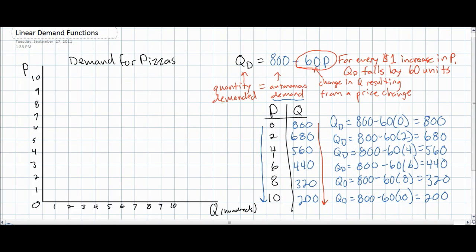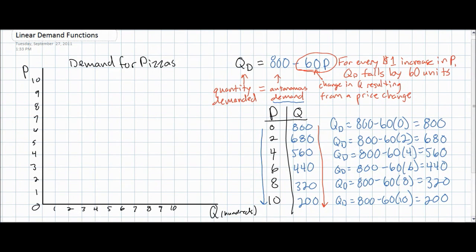The next thing we'd want to do is actually plot a demand curve using the figures from our demand schedule derived from our demand function. Let's just choose two points from our demand schedule to plot on our axis. Let's put the quantity demanded at a price of zero — clearly 800 pizzas are demanded at a price of zero. Now since this is a linear function, we only need two points to derive our demand curve. So let's go up to a price of 10 and plot the quantity demanded — at $10, 200 pizzas would be demanded.